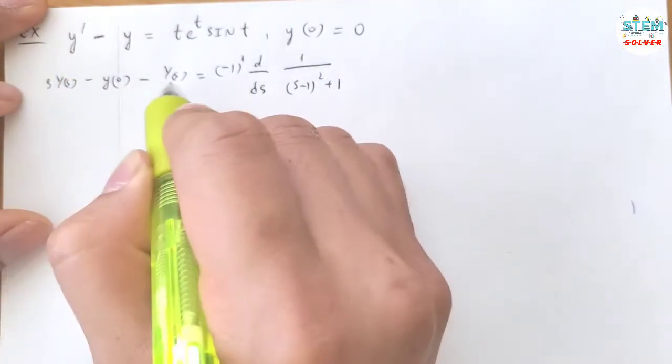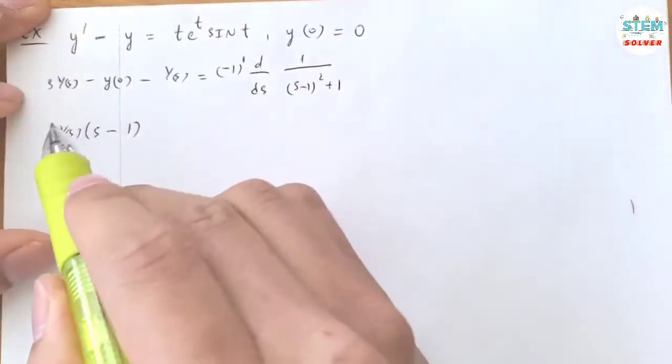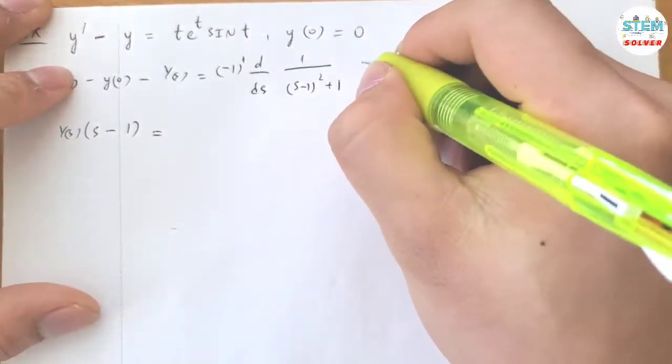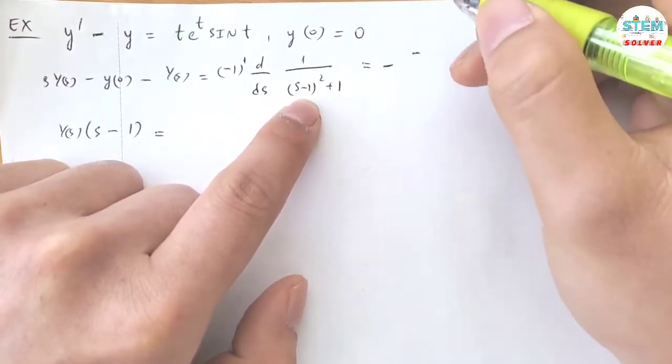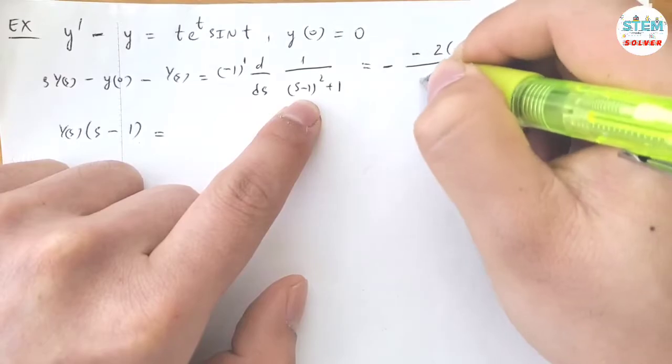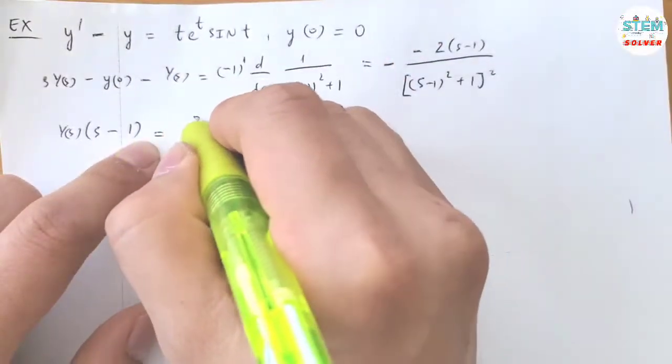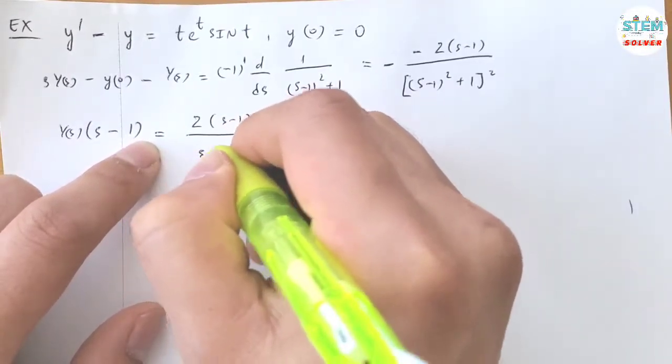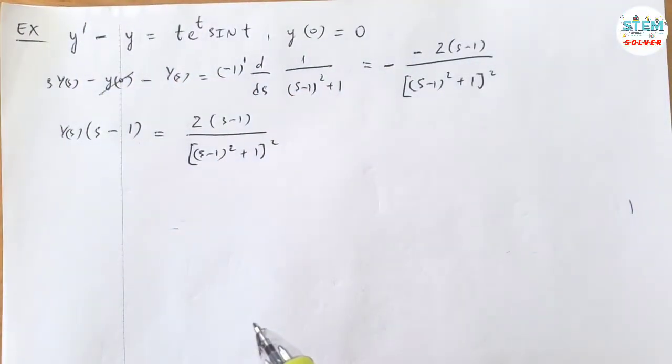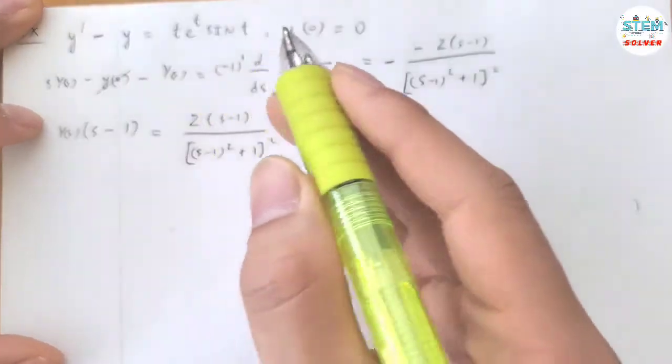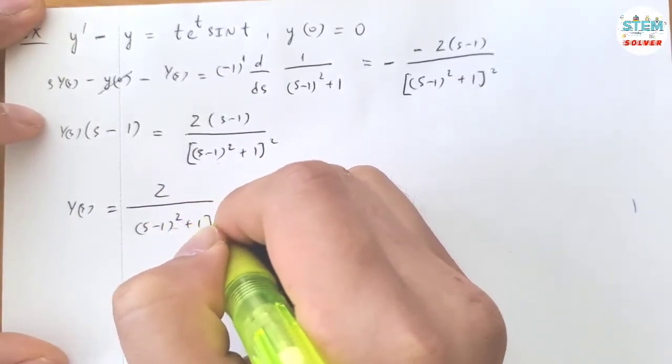Next is to factor out capital Y of s. So let me factor it out first. Then I'm left with s minus 1. And on the right side, take the derivative of this one. I have negative of, this is negative of 2 times s minus 1 over s minus 1 square plus 1 square. So negative negative positive, s minus 1 over s minus 1 square plus 1 square, and y of 0 equals 0 so it just cancels out. Now divide both sides by s minus 1, so I'm left with 2 over s minus 1 square plus 1 square.